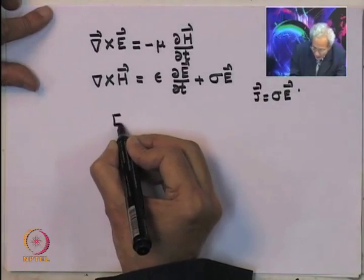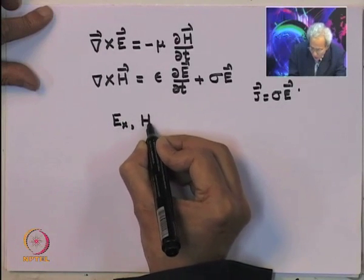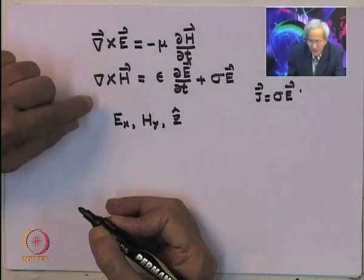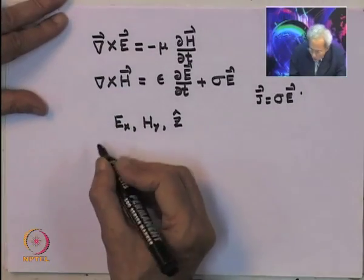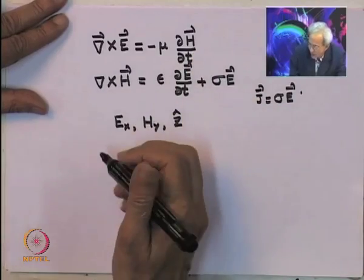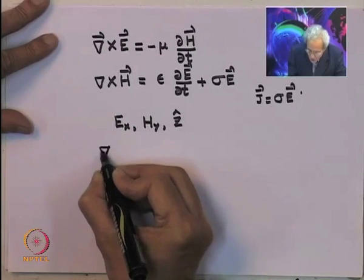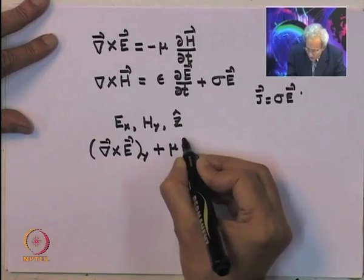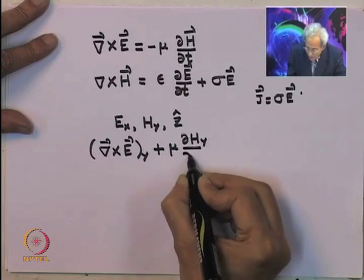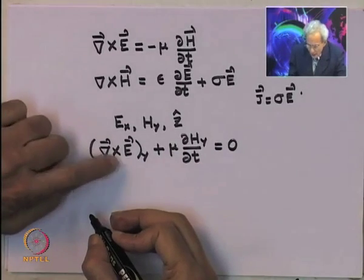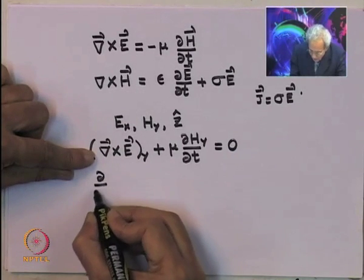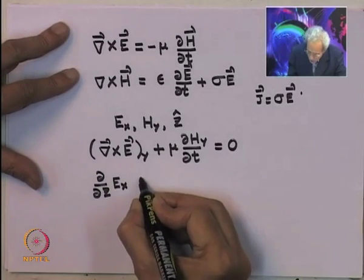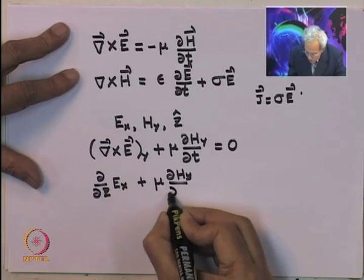Since E is along the x direction, H is along the y direction, and propagation is along z, we take the appropriate components. The y-component of the curl equation gives dEx/dz plus mu dHy/dt equals zero.